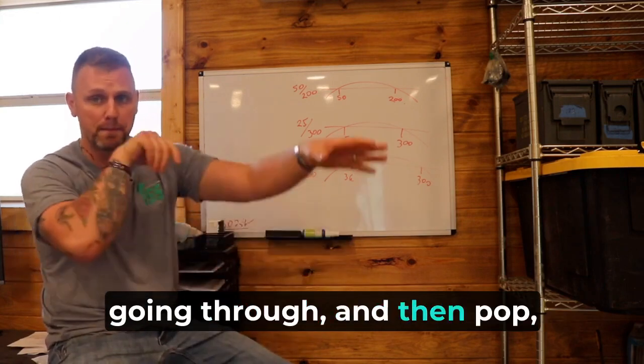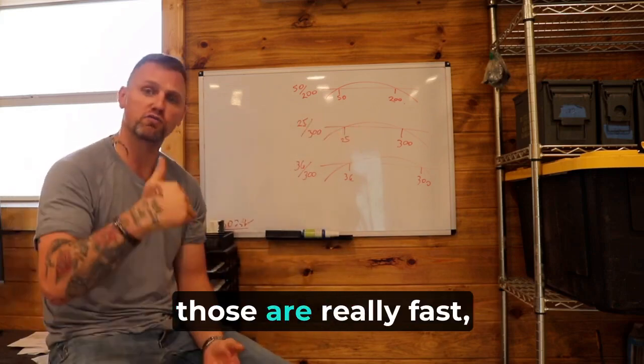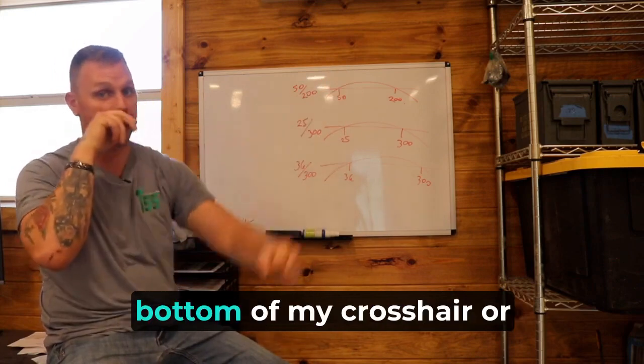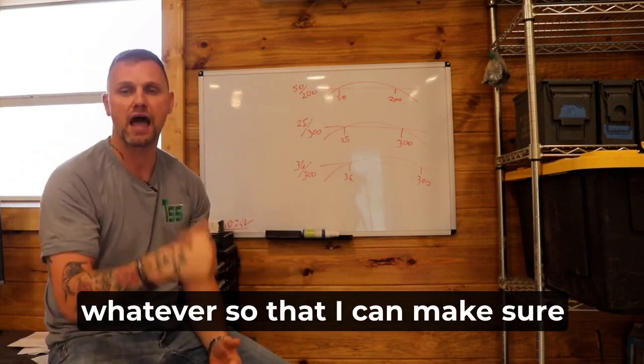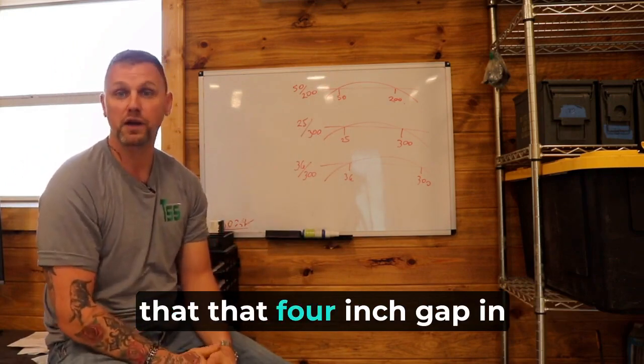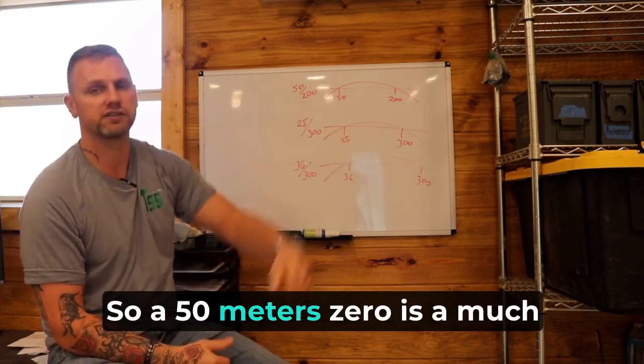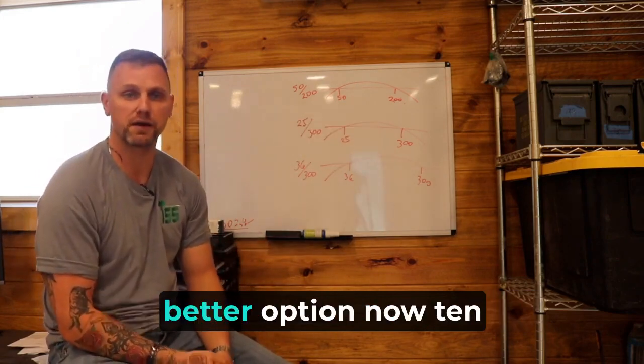So if I'm clearing a room going through and then pop, pop, pop, pop, pop, pop, right? Those are really fast. I don't have time to adjust and to say, okay, I need to get this guy at the bottom of my crosshair or whatever so that I can make sure that that four inch gap in there is tightened down. So a 50 meters zero is a much better option. Now, 10 yards and closer, there's probably not a lot of difference in that because mostly you're talking about the height over bore, your rifle and your optics.